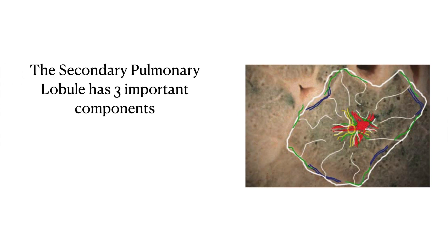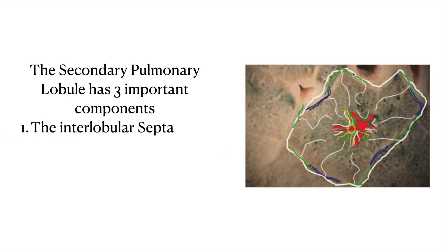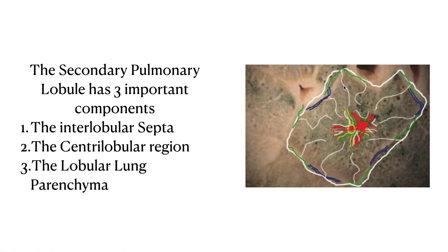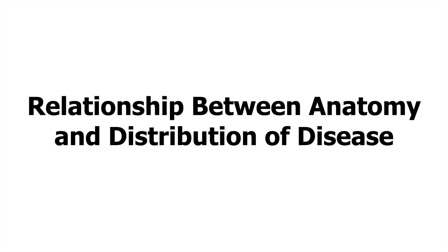The secondary pulmonary lobule has three important components: the first is the interlobular septa, the second is the centrilobular region, and the third is the lobular lung parenchyma. The distribution of disease among these components will tell us which disease process is going on.